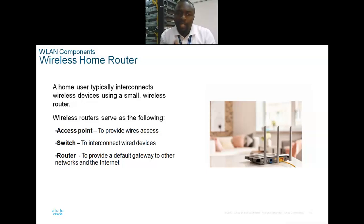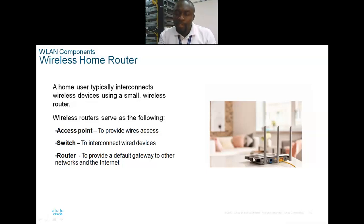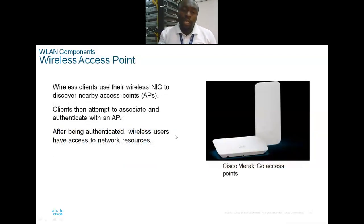We also have home routers as a wireless LAN component. The home router is simple — you can configure it to give you an access point and perform NAT. Some come in the form of a small switch with multiple ports behind, and antennas that can provide a wireless access point in a range of about 300 feet.